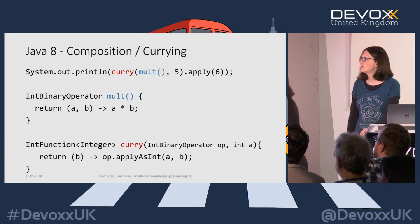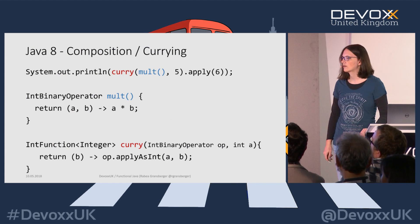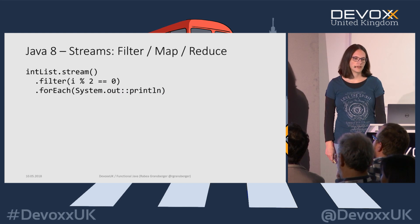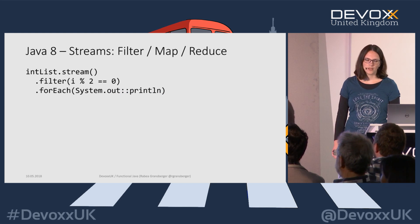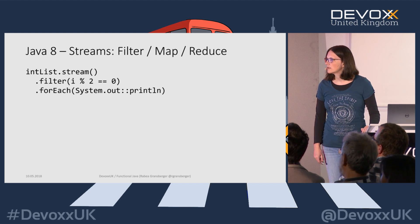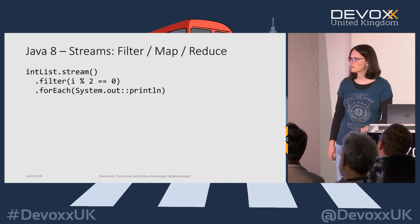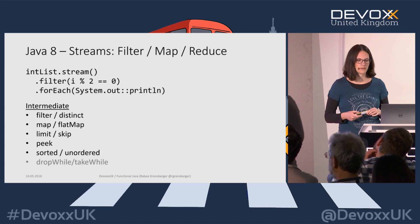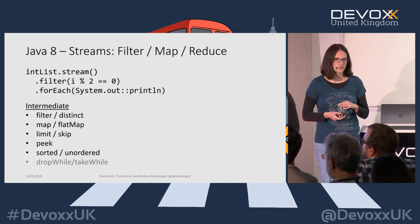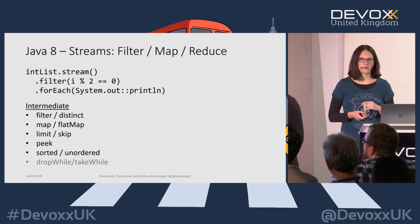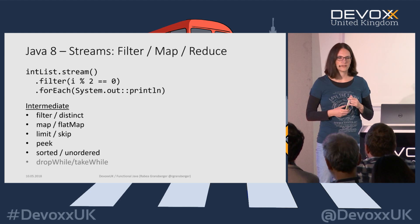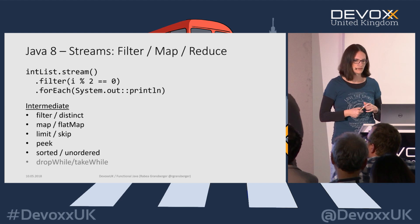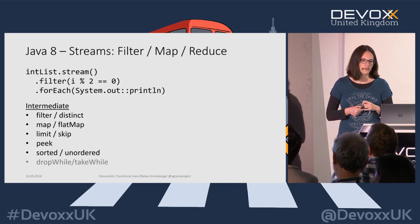If we then apply the value 6, it's 5 times 6, but 5 is always fixed so we can only change `b`. This is how you use composition and currying to fix one of the parameters. With streams we have filter, map, and reduce — I'm showing filter and a kind of reduce which is `forEach` here. Some operations are intermediate operations — they don't give a final result, they just build up a pipeline.